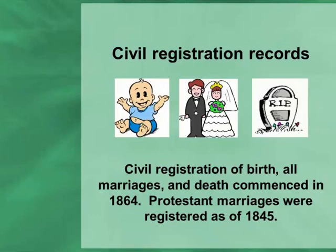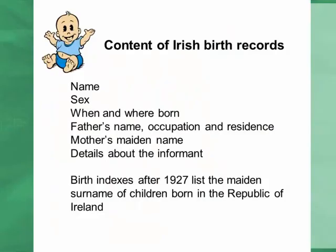Ireland had a different system of organizing their civil registration records. People who were Protestant, or even those of mixed religion who married in the Church of Ireland — those Protestant marriages were registered as early as 1845, but it wasn't until 1864 that all births, marriages, and deaths were registered with the government. This is one of the sources that is on the FamilySearch website; we'll discuss that in a few minutes.